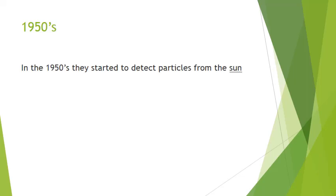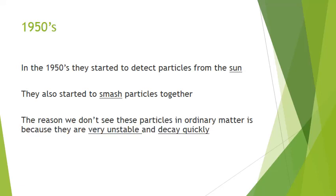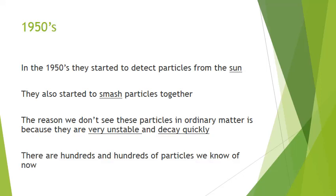In the 1950s, they started to detect particles from the sun, and at that point they also started to smash particles together. All of a sudden, we don't just have protons, neutrons, and electrons anymore, and these basic particles of radiation — we're detecting all these other particles. The reason we don't see these particles in ordinary matter is that they're very unstable and they decay quickly, making them very hard to not only detect but also to study. We now know of hundreds and hundreds of particles, and they've been categorized. We're going to take a look at some of the basic ones that fall into the standard model.